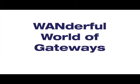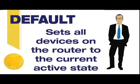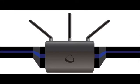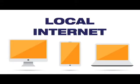Welcome to the wonderful world of gateways. First, let's go over some basic terminology. Default sets all devices on the router to the current active state. So if VPN is turned on, everything uses VPN. If VPN is turned off, everything goes out local.